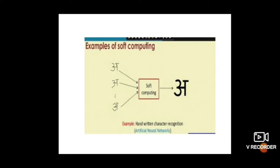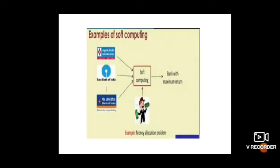For handwritten character recognition, we achieve this with the help of artificial neural networks. We have samples written in different ways, and then a machine is trained on those samples. The machine will then tell us what character it is — for example, it will recognize the letter R.